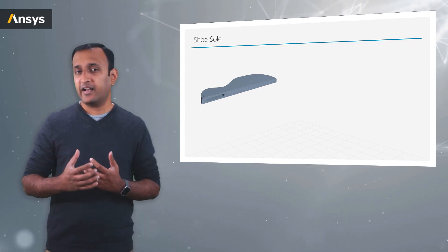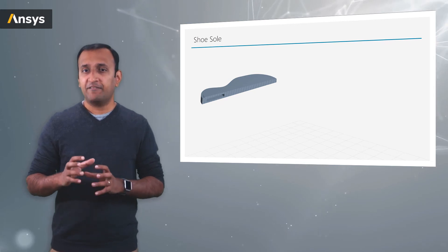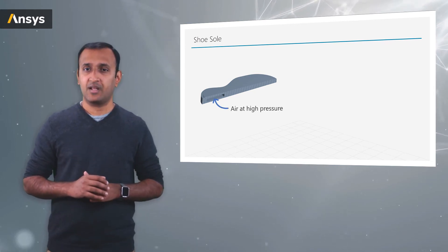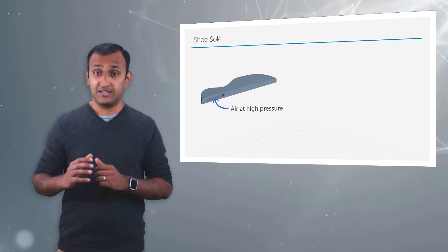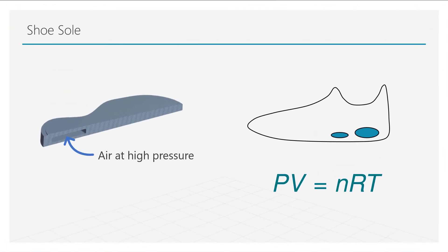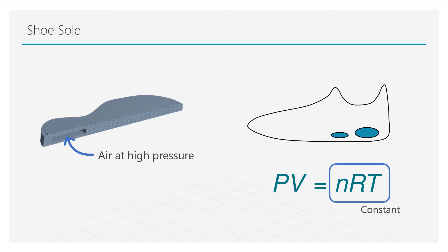After they created these voids, they filled it with air at a specific pressure. Now this is an isolated system, so the number of air molecules and their temperature don't change much. So from the ideal gas equation, the right hand side is always constant. So if there are any changes in the volume of the void, then the pressure tries to adjust itself so their product remains constant.